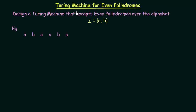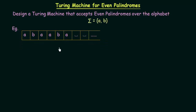Our task is to design a Turing machine which will accept even palindromes. First we will see how this Turing machine will work, and after that we will see how to design it using the transition diagram. Here we have the tape of our Turing machine with the string A B A A B A placed in it, and the remaining cells are filled with blank symbols. This is how our tape looks for this Turing machine.